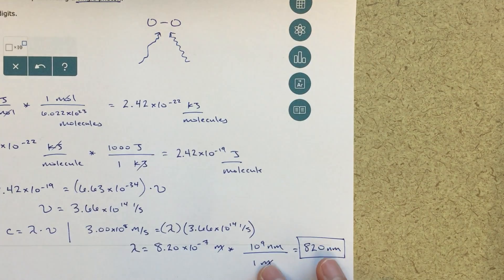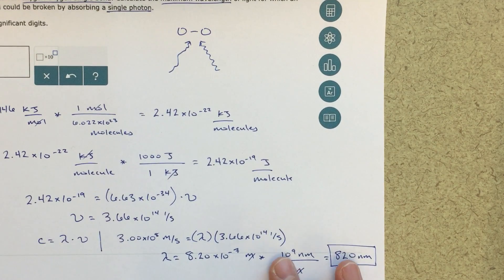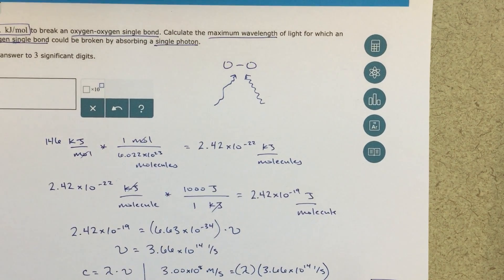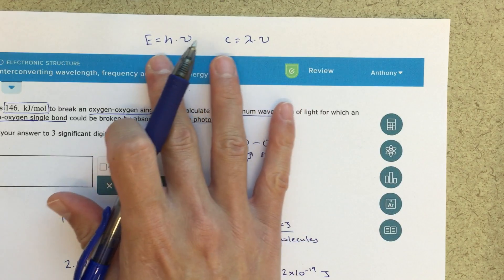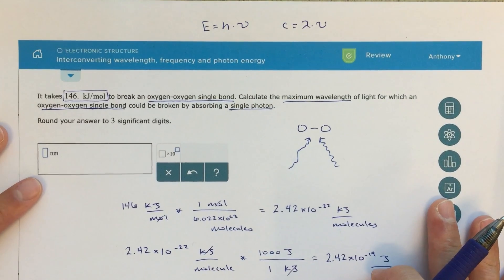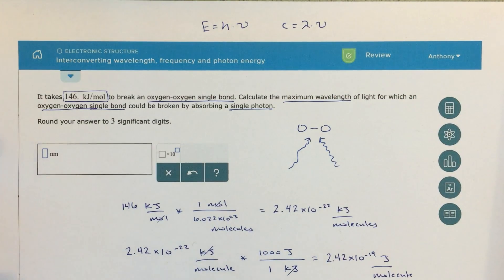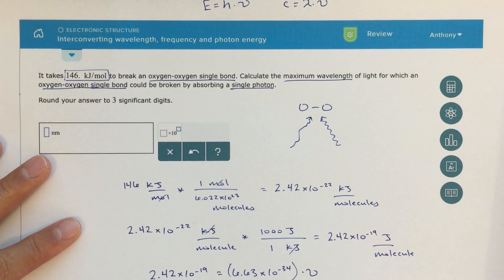These conversions between nanometers and meters are something you'll want to practice. Applying both equations — E equals Planck's constant times frequency, and C equals wavelength times frequency — is all part of solving this type of problem. Let me know if you have any other questions. I'll see you guys.